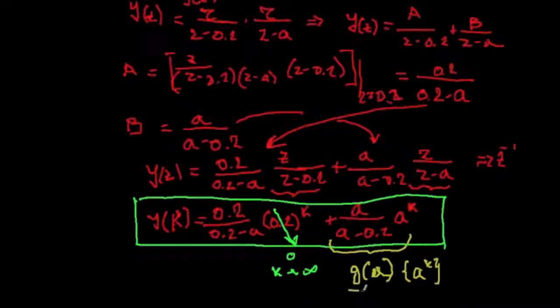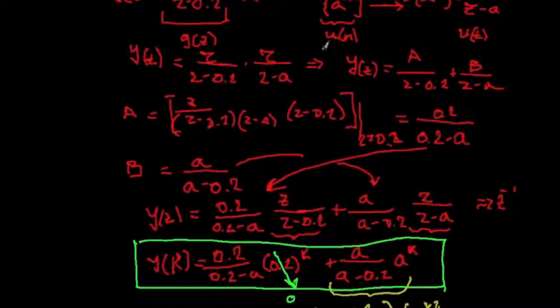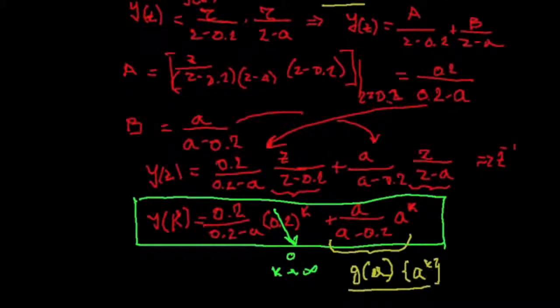In other words, we demonstrated that when we apply the following input, here, that is A(k) or A(n), the output was the same sequence, amplified by the gain that is evaluated as a transfer function evaluated at coefficient a. So, this is a very interesting property, and later on we are going to use this in the filter design.